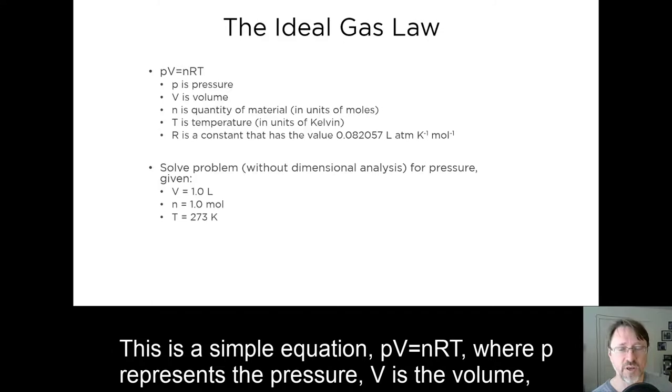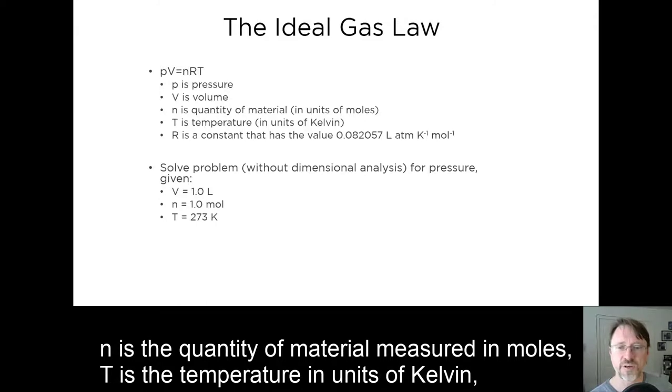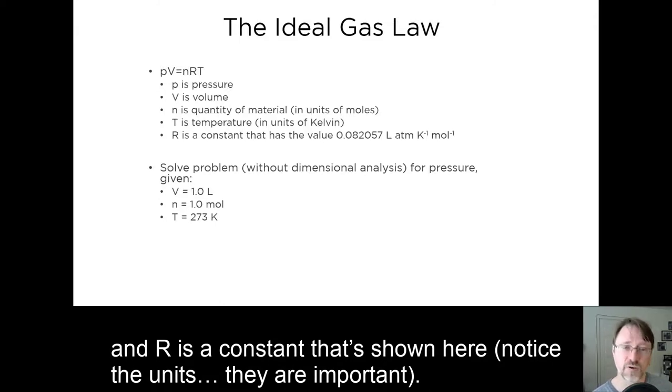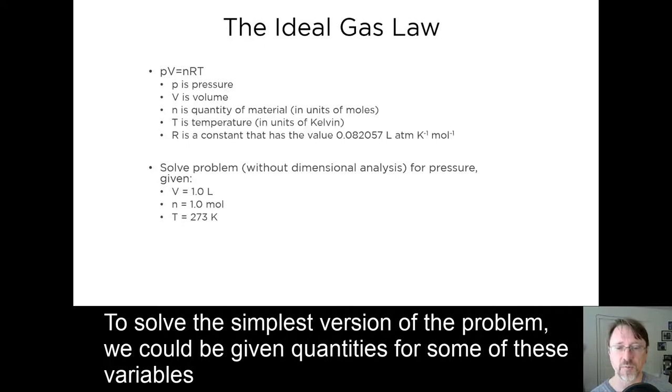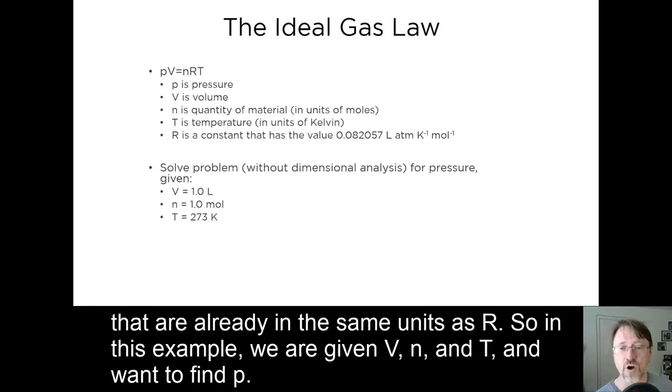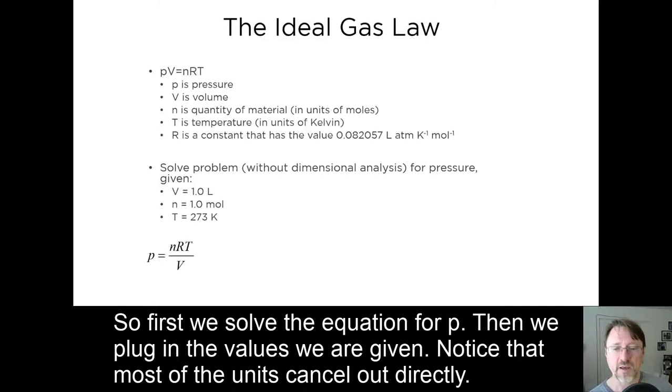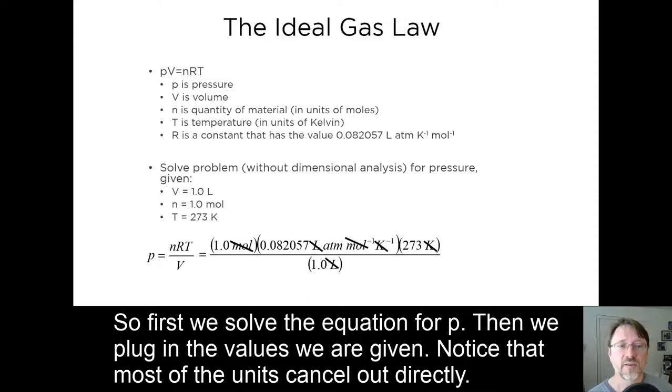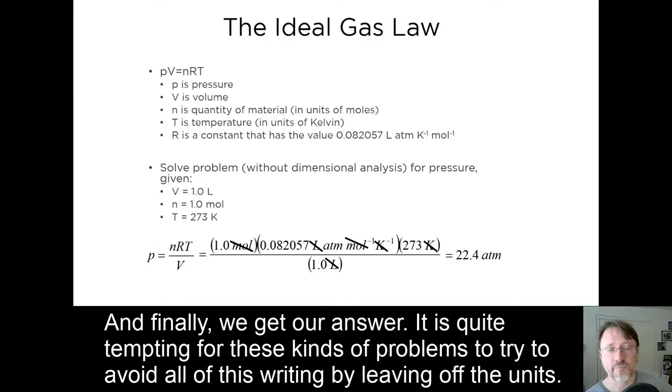So this example we're going to look at is a key equation you've already encountered, the ideal gas law. This is a simple equation, PV equals nRT, where P represents the pressure, V is the volume, N is the quantity of material measured in moles, T is the temperature in units of Kelvin, and R is a constant that's shown here. Notice the units, they're important. To solve the simplest version of this problem, we could be given quantities for some of these variables that are already in the same units as R. So in this example, we are given V, N, and T, and we want to find P. So first we solve the equation for P, then we plug the values in that we are given. Notice that most of the units cancel out directly. And finally, we get the answer.